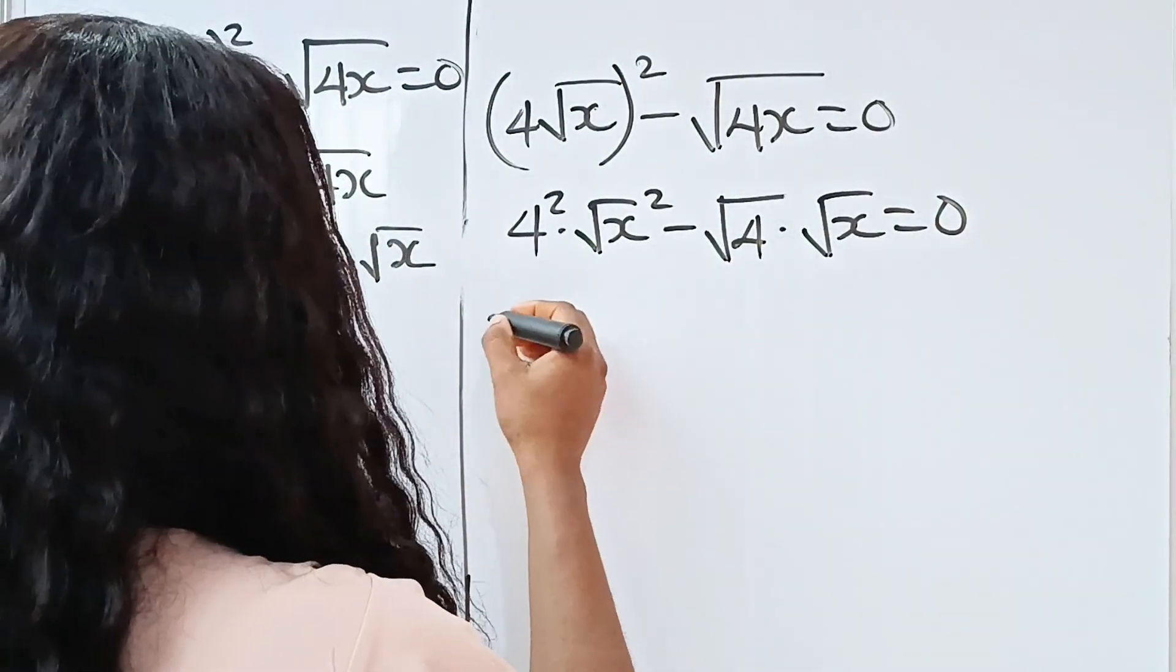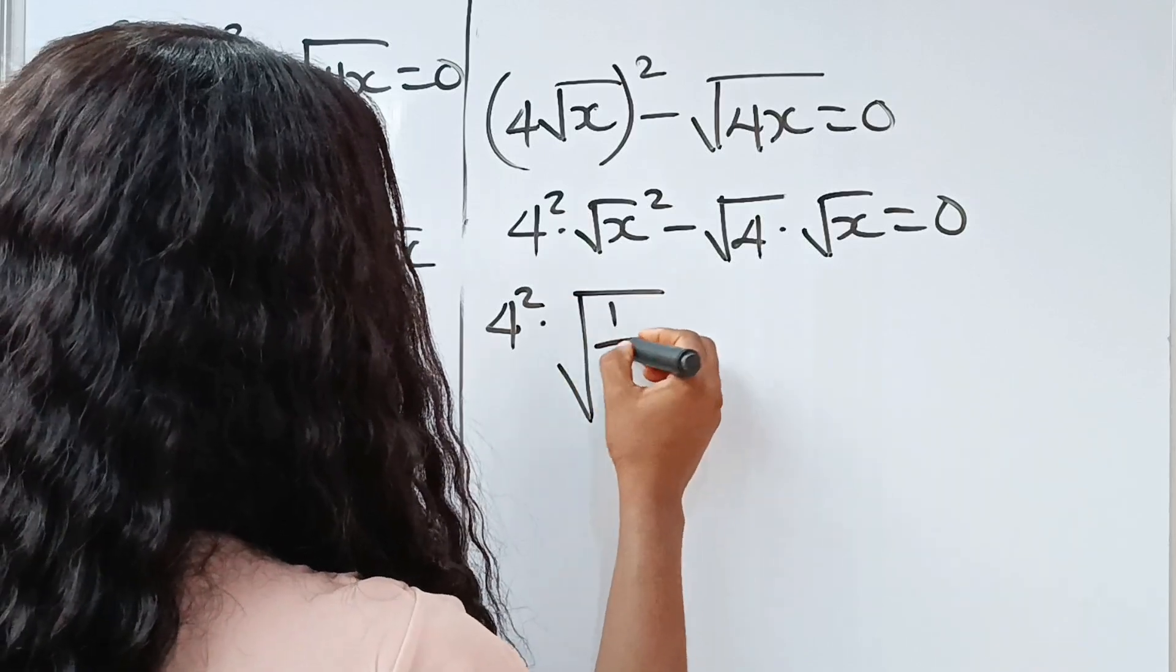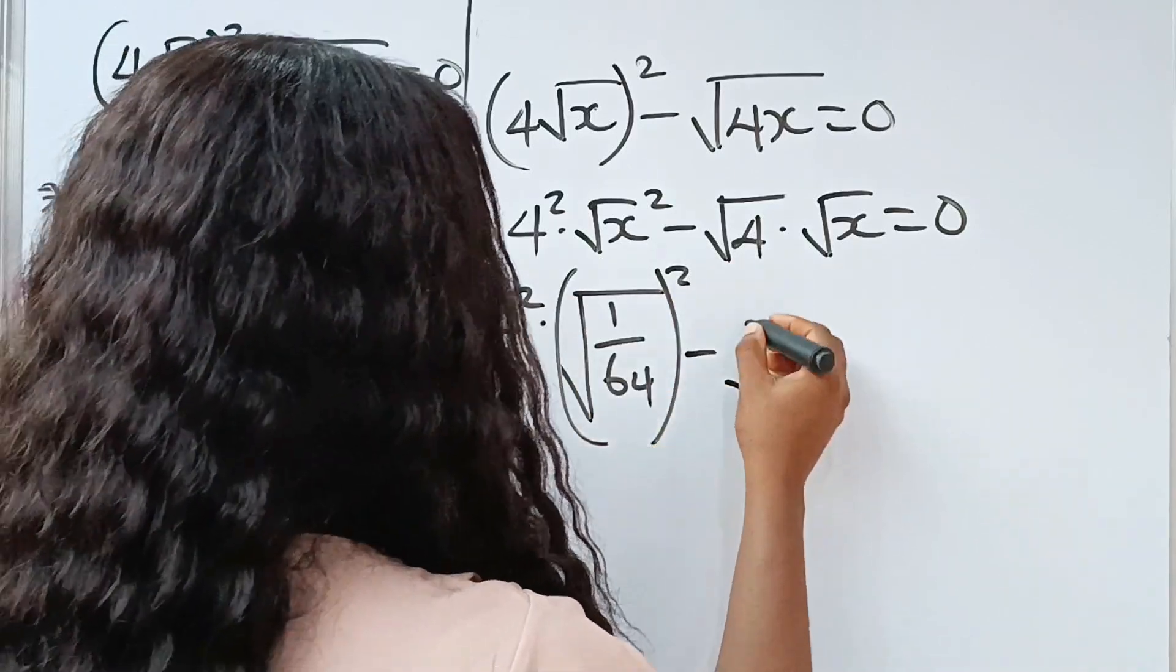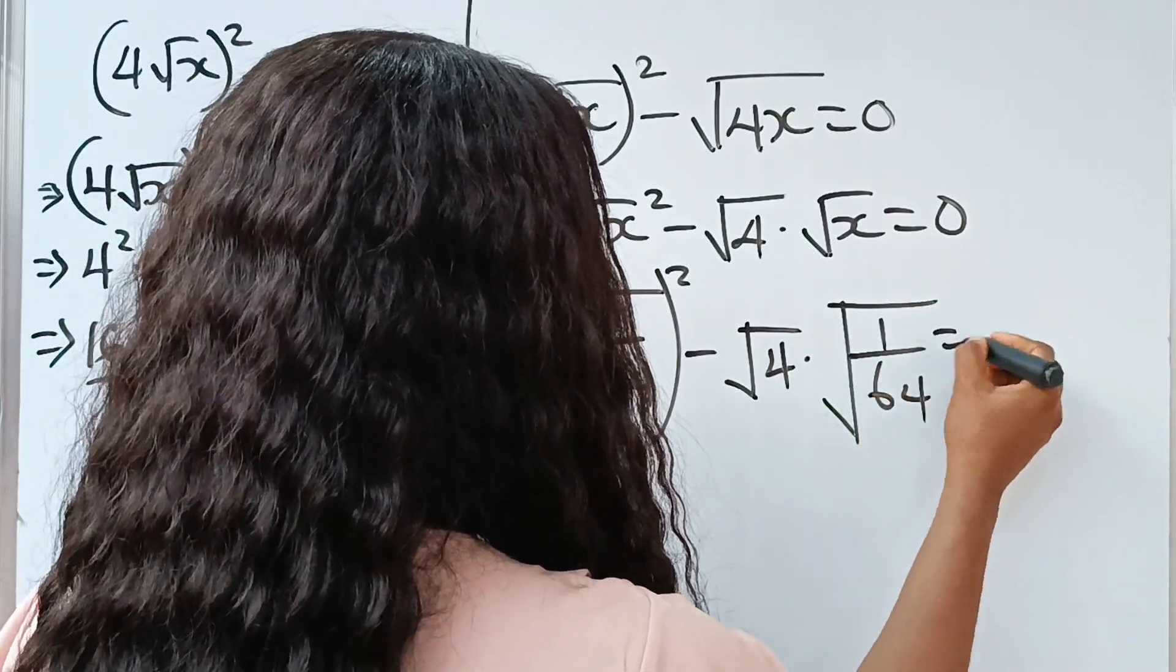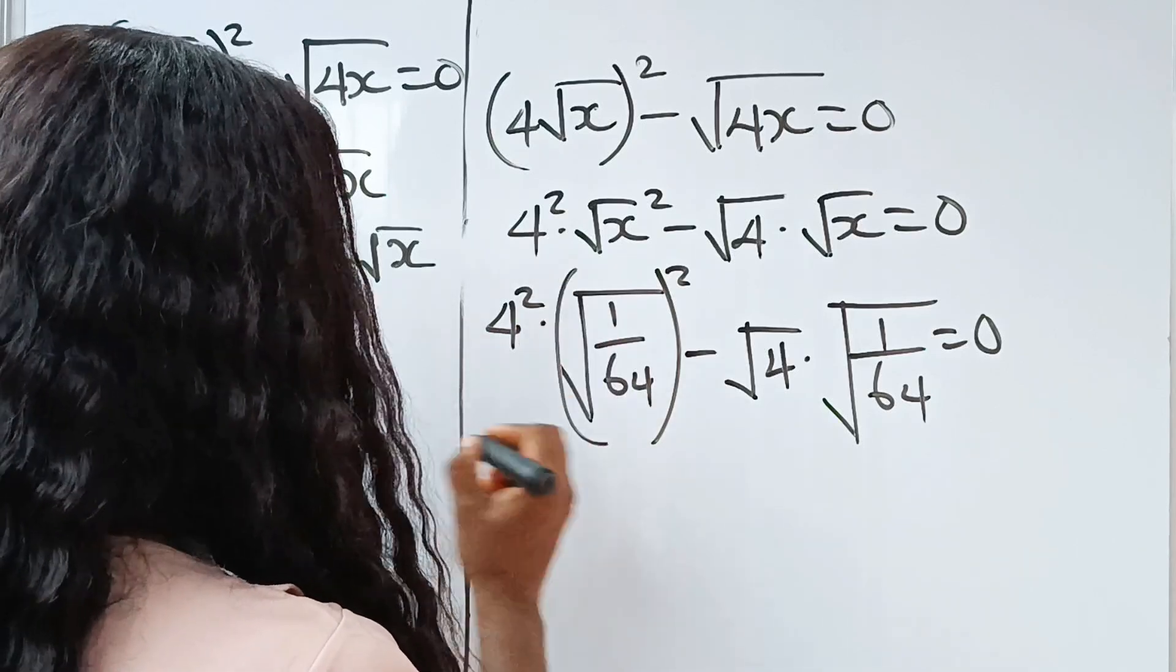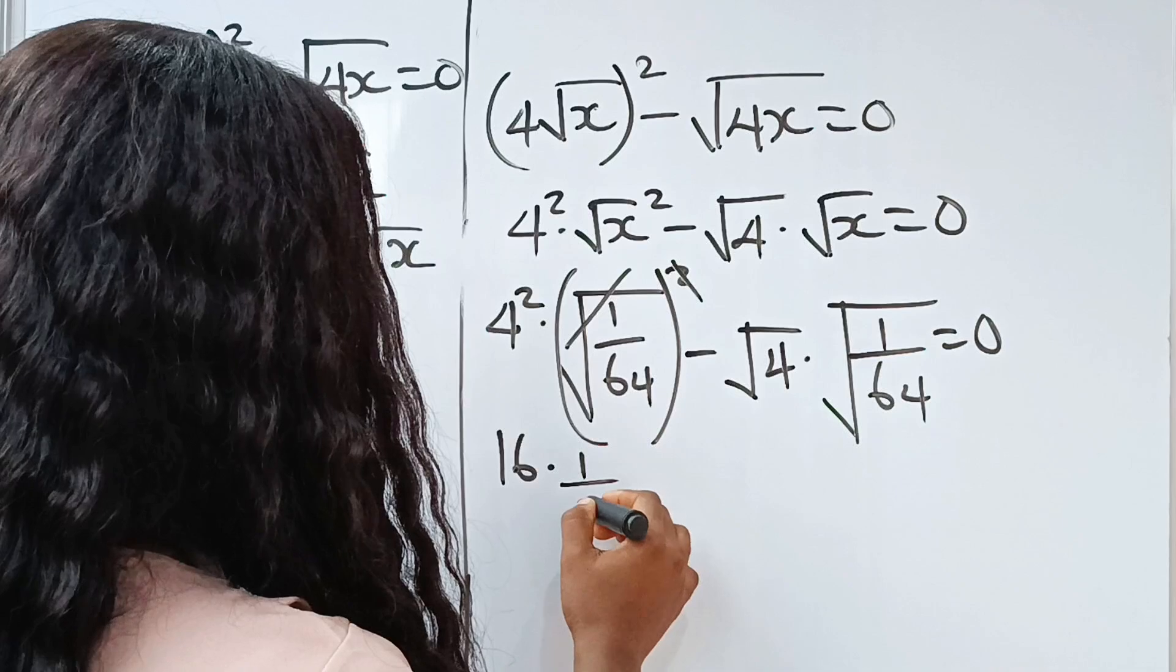Now, our x is 1 over 64. So, we have 4 squared multiplied by square root of 1 over 64 squared minus root 4 multiplied by square root of 1 over 64 is equal to 0. Now, 4 squared is 16, and this will remove the square root and we have 1 over 64.